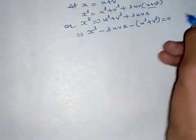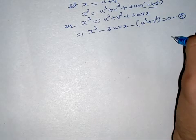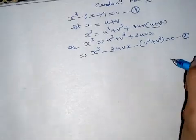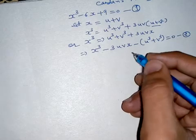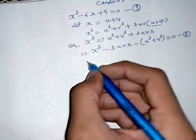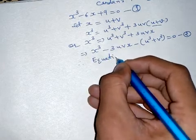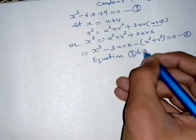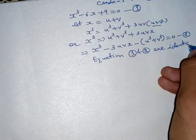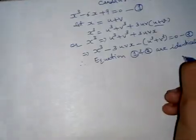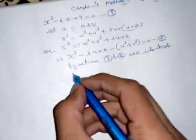So we get: x cubed minus 3uv·x minus (u cubed plus v cubed) is equal to 0 — that is equation two. Now, equation one is x cubed minus 6x plus 9 equals 0. Since equation one and equation two are identical, we can compare their coefficients.